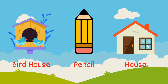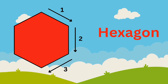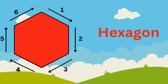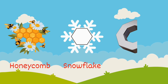The next shape we have is hexagon. A hexagon has six sides and six corners. Let's see which objects we have in our surroundings which are hexagon in shape. Honeycomb, snowflake, nut bolt — they are hexagon in shape.